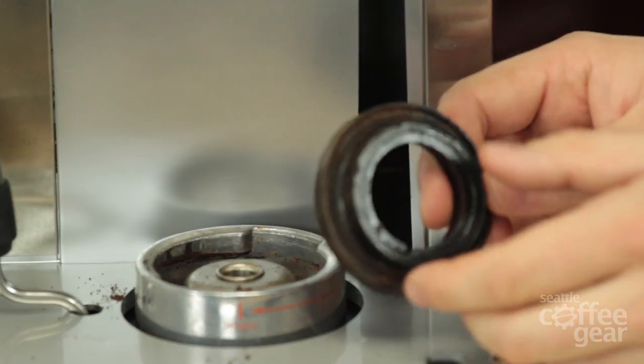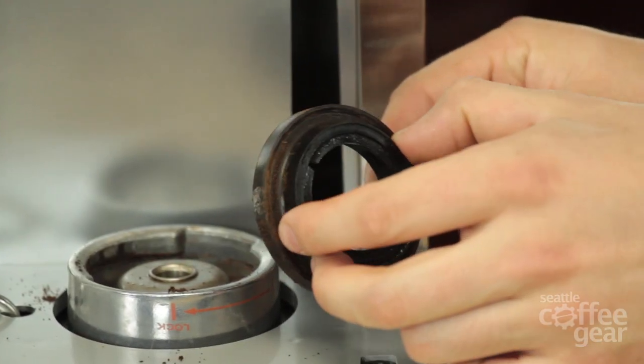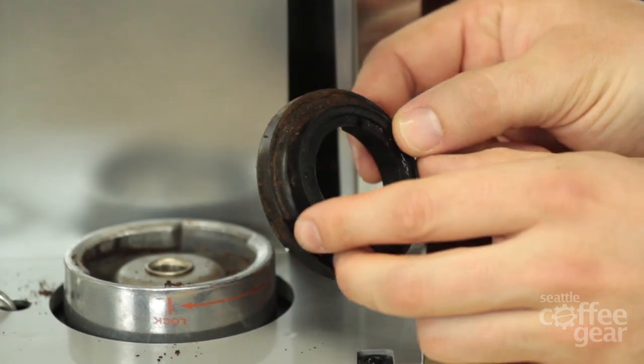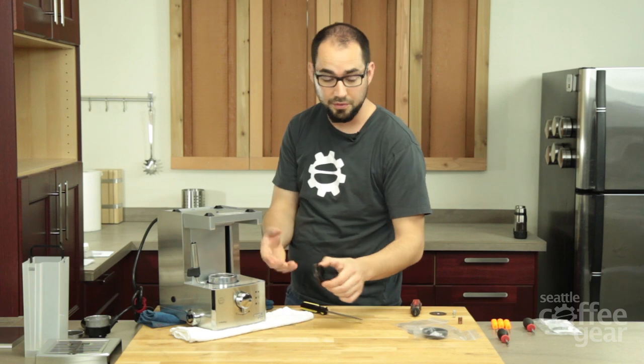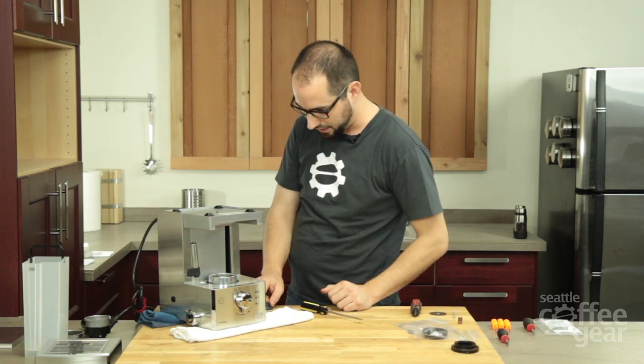They tend to get very brittle and dry. The older they get and the more coffee that gets around them. And then they start cracking. And that's when you see the seal start to fail. So this one looked like it was in need of a replacement.